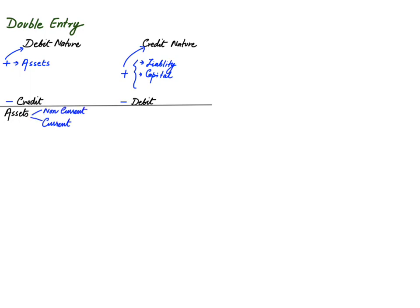We have two types of assets: non-current assets and current assets. Non-current assets are assets of a permanent nature — there is no frequent change in these assets. They are bought with the intention to use rather than to sell, and are kept for more than one year. Examples include buildings — we cannot buy buildings every day — and motor vehicles. Non-current assets are also known as fixed assets.